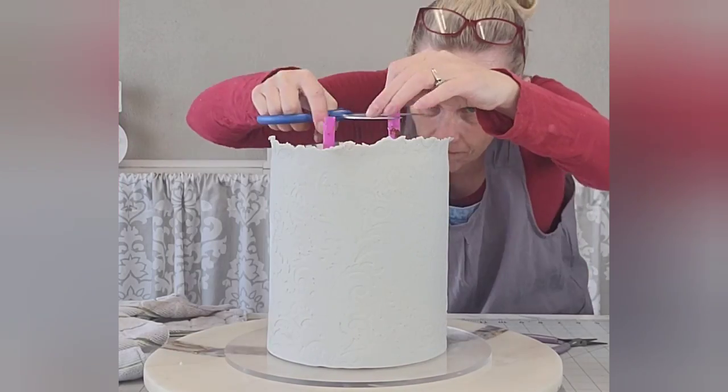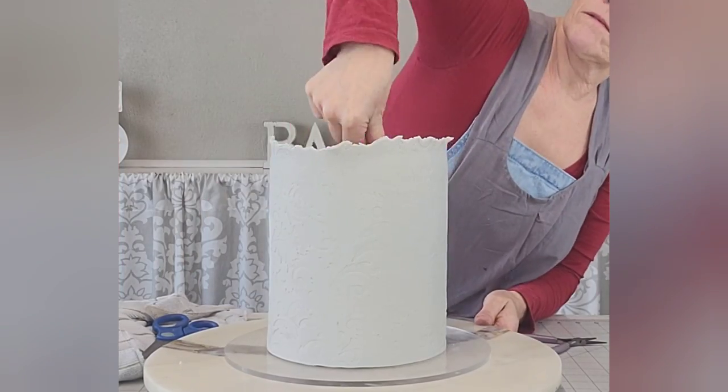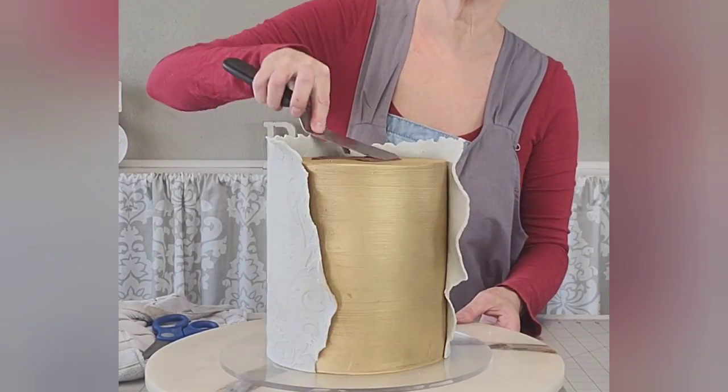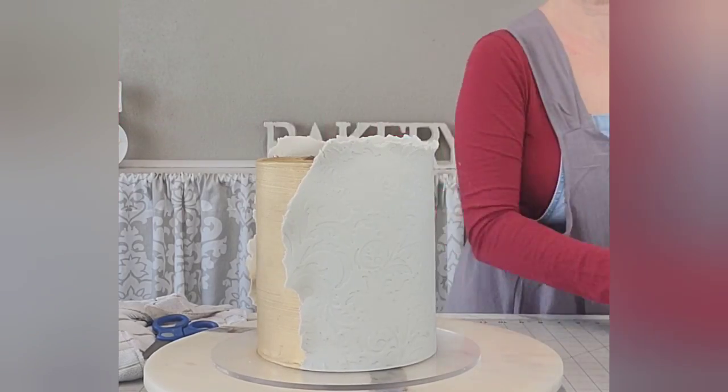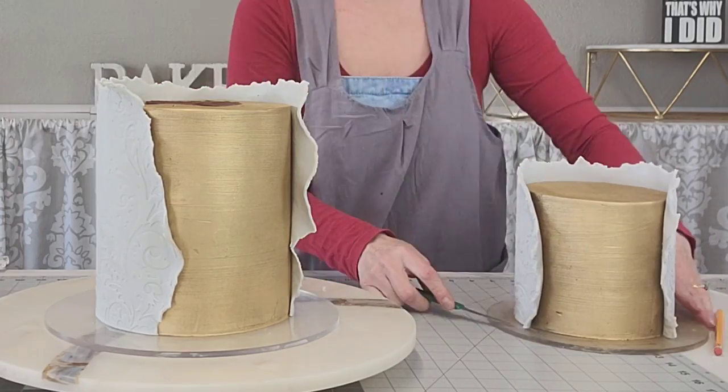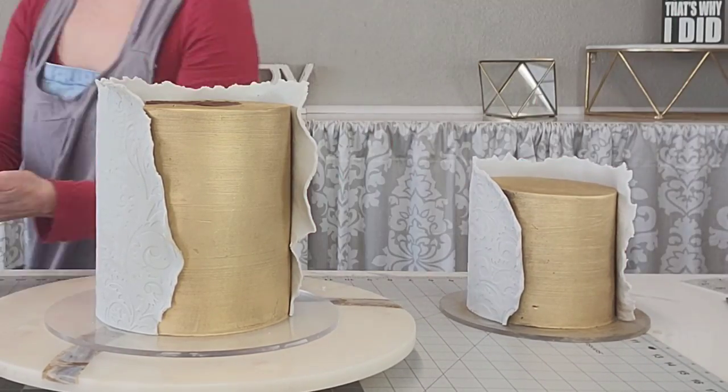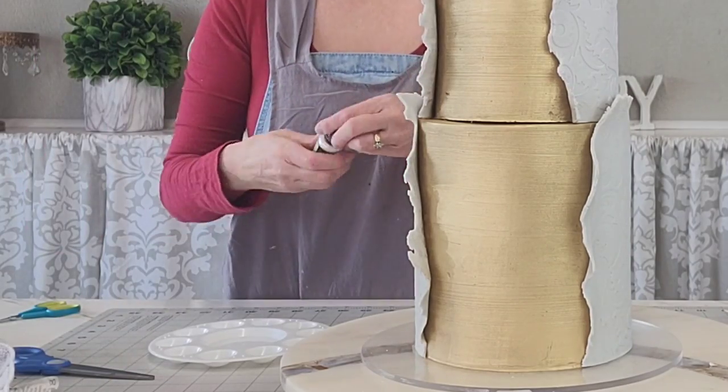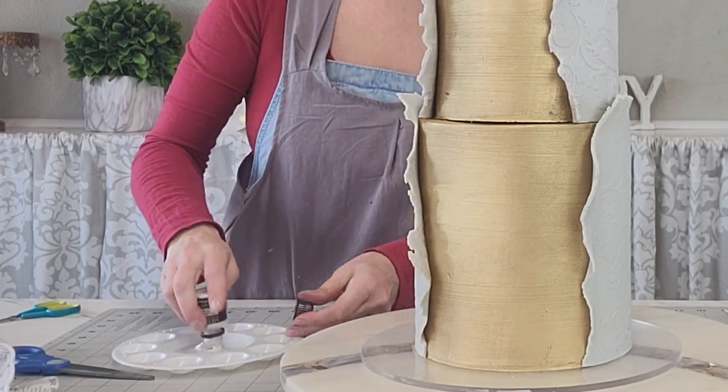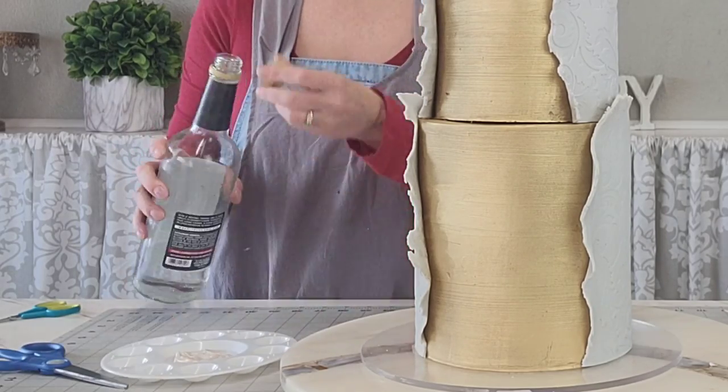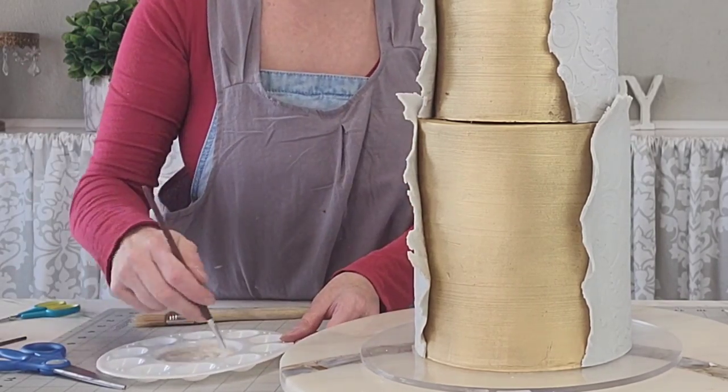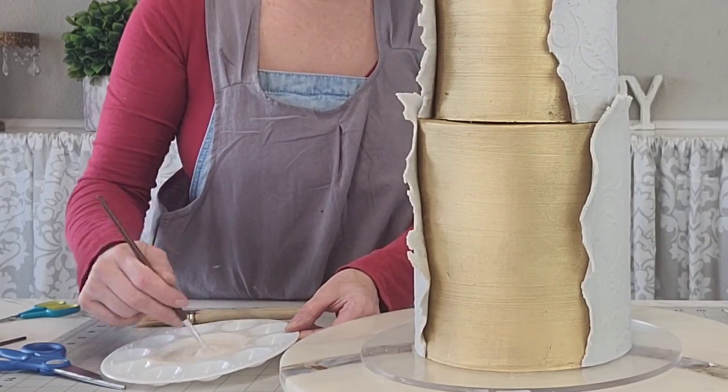Now I'm just adding my boba tea straws for support to the top tier. I have three of them - since this isn't going anywhere I feel good with three. If I were doing this for an order I'd probably add five. Just cut them flush to the top, use some ganache as a glue to stick your bottom tier and your top tier together. And I had chilled that top tier in the refrigerator for a good half an hour so that I could just pick it up and lift it on.